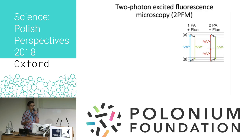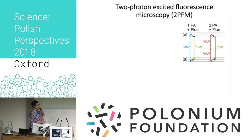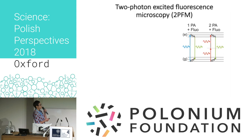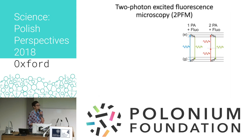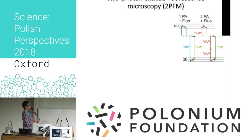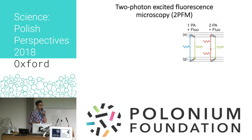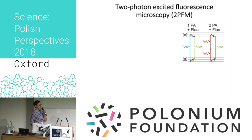For those not familiar with the technique: in a conventional fluorescence microscope you have one-photon excitation. To see fluorescence, you shine visible or UV light and excite a photon from the ground state to the excited state, then observe the fluorescence. In a two-photon microscope, you do the same but with the simultaneous absorption of two photons, and then you also observe the resulting fluorescence.